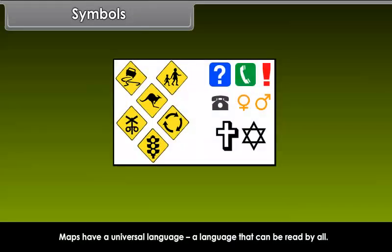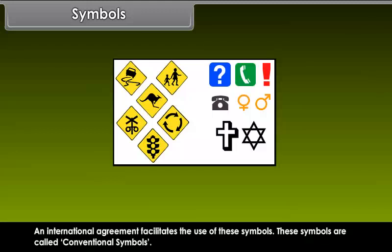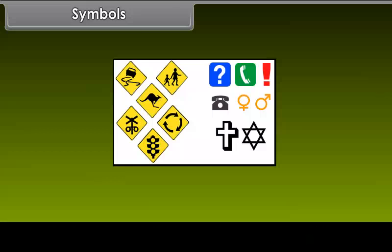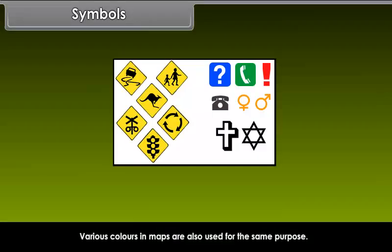Maps have a universal language. A language that can be read by all. An international agreement facilitates the use of these symbols. These symbols are called conventional symbols. Various colors in maps are also used for the same purpose.